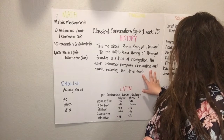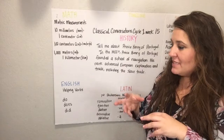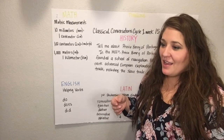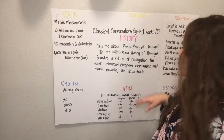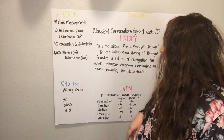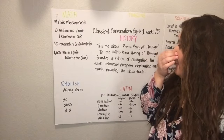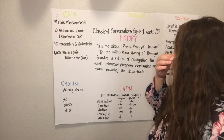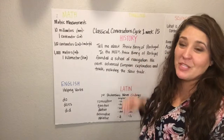We rolled our funny dice — I have two different dice. One has things like standing up, sitting down, or plugging your nose. The other has different voice styles like a man voice, squeaky voice, mouse voice, high voice, soft voice, or loud voice. So for example, standing up and plugging your nose in a high-pitch voice: In the 1400s, Prince Henry of Portugal founded a school of navigation. His work advanced European exploration and trade, including the slave trade.